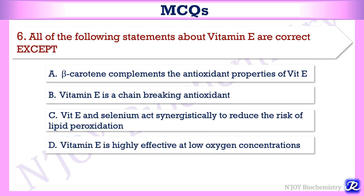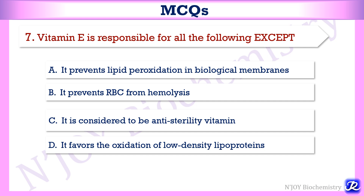Sixth MCQ: all of the following statements about vitamin E are correct except — (A) beta-carotene complements the antioxidant property of vitamin E (correct, both are antioxidants); (B) vitamin E is a chain-breaking antioxidant (correct); (C) vitamin E and selenium act synergistically to reduce the risk of lipid peroxidation (true); (D) vitamin E is highly effective at low oxygen concentration (false — it is effective at high oxygen concentration). Answer: D. Final MCQ: vitamin E is responsible for all of the following except — it prevents lipid peroxidation in biological membranes (correct); prevents RBC hemolysis (correct); is considered an anti-sterility vitamin (correct); it favors the oxidation of LDL (false — it prevents LDL oxidation). Answer: D.